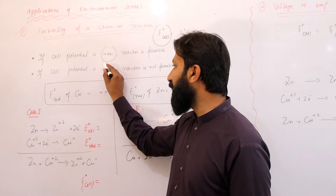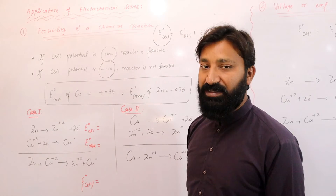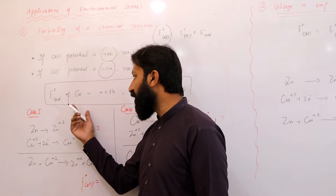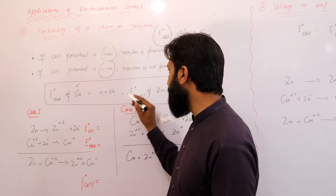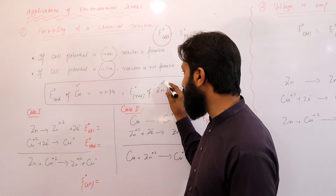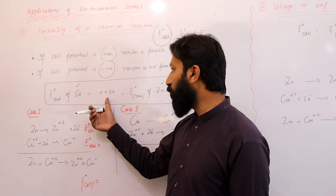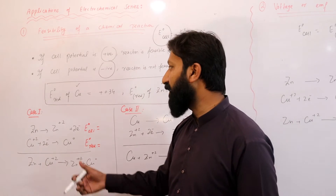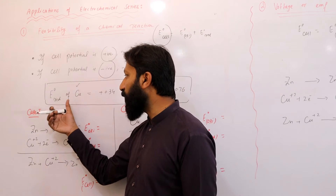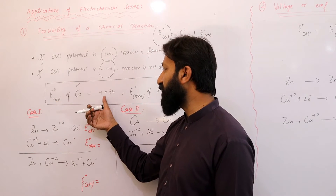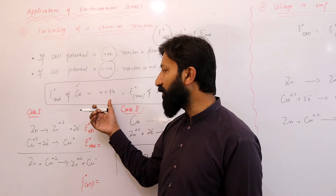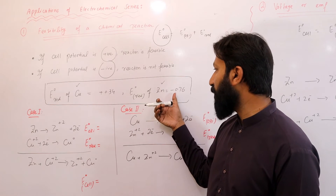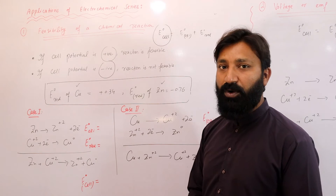इसके लिए मैंने दो elements लिए हैं — एक copper, दूसरा zinc। इन दो values को मैंने Electrochemical Series के data से लिया है: copper का reduction potential positive 0.34 V, और zinc का reduction potential minus 0.76 V।